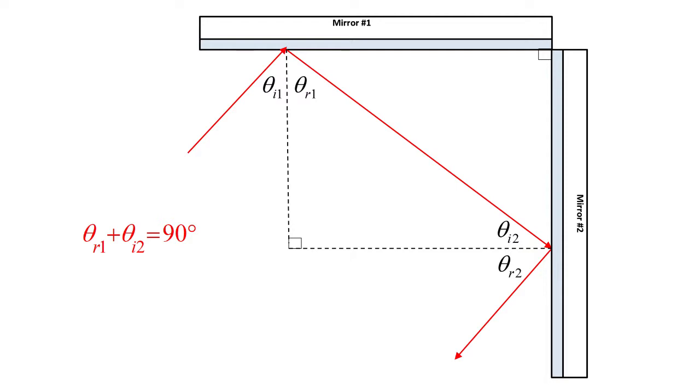When we apply the law of reflection to both mirrors, we can bring in the other two angles and see that theta sub i1 plus theta sub r1 plus theta sub i2 plus theta sub r2 equals 180 degrees. Note that the first two angles must be equal by the law of reflection. The last two angles must also be equal and the middle two must add up to 90 degrees.